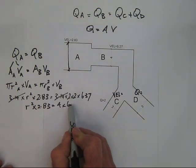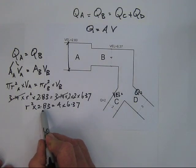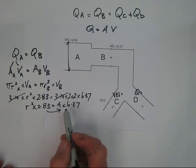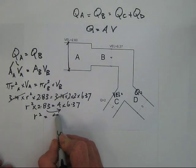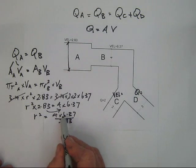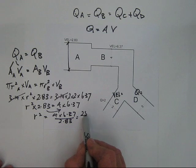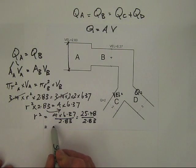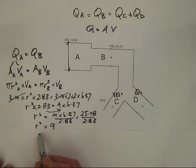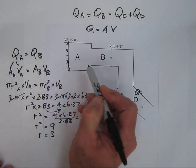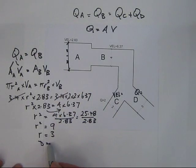We're left with R squared times 2.83 equals 2 squared times 6.37, which is 4 times 6.37. Transposing 2.83 gives R squared equals 4 times 6.37 divided by 2.83, which is 25.48 divided by 2.83, equal to 9. So R squared equals 9, meaning R equals 3. R is the radius at A, so the diameter at A equals 6.